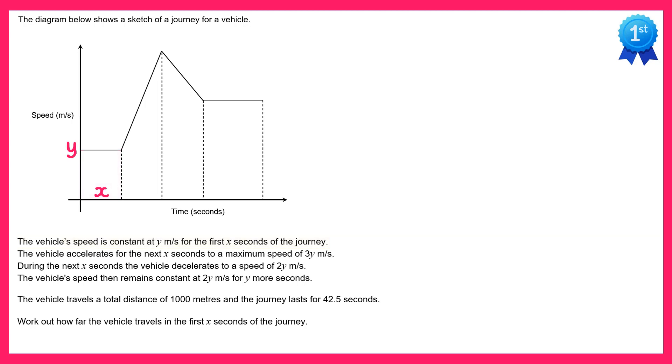We're then told the vehicle accelerates for the next x seconds to a maximum speed of 3y meters per second. So this is now the second section of the diagram here. Once again the horizontal distance must be x because it said the next x seconds, but this time it goes up to a maximum speed of 3y. So we know the peak of this diagram up here is at 3y.